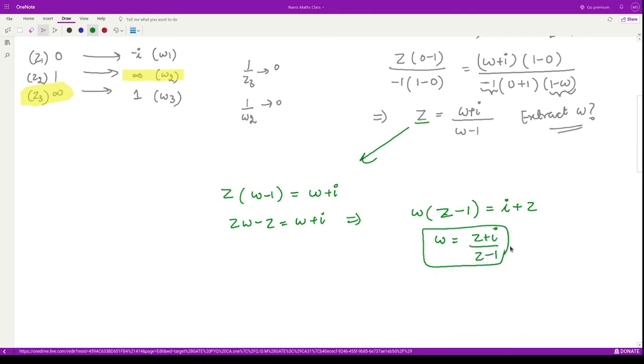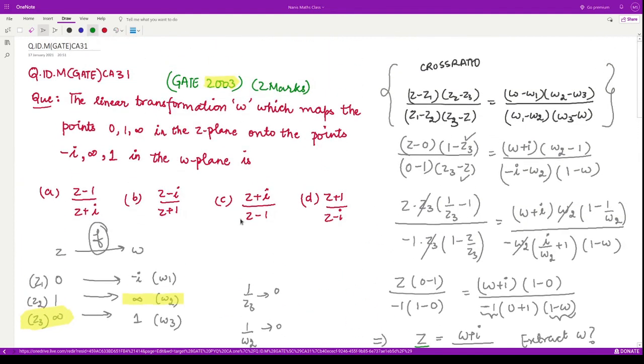Let us look at our options. From here (z + i)/(z - 1) is the correct option. Option C is the correct answer. I hope you understood this bilinear transformation well by now. That is it for this video. I will see you in the next one.